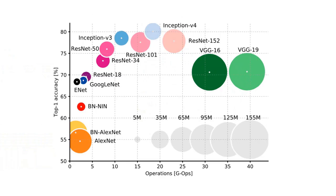Consider the ImageNet challenge on Kaggle. There are millions of images consisting of thousands of categories, and you are expected to build a model to classify any image based on these existing categories. These are the popular winner models, where the size of the circle represents the complexity of the model, and the y-axis location represents the accuracy.